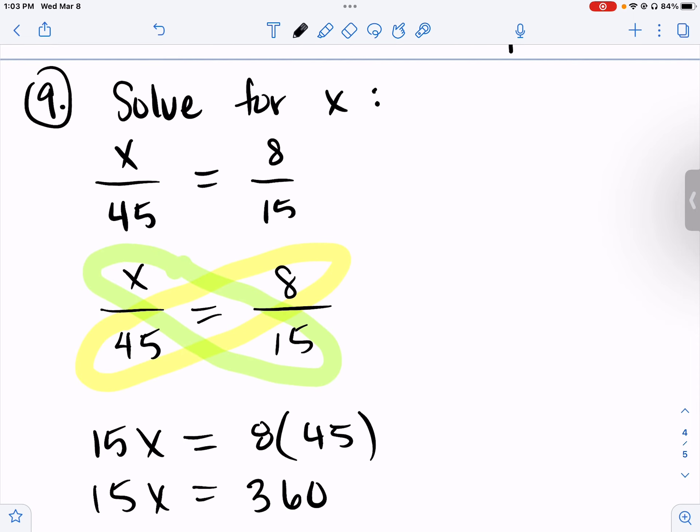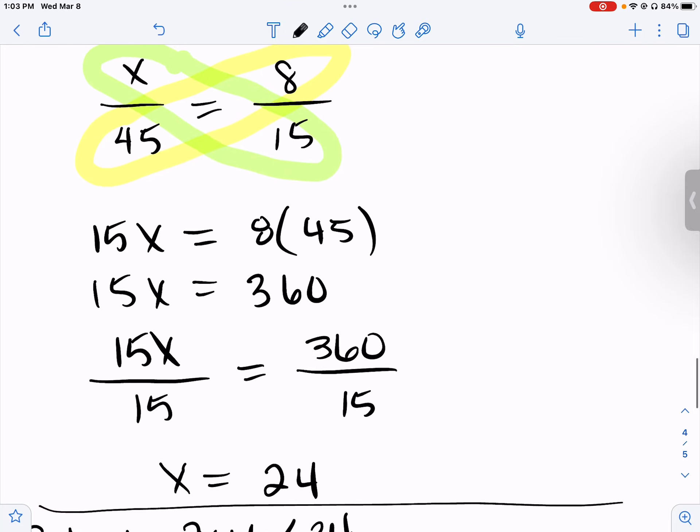Number nine: Solve for x. x over 45 equals 8 over 15. When you have two fractions, you can use that quick little crisscross method. So multiply x times 15 is 15x, 8 times 45 is 360. So 15x equals 360. Divide by 15 on both sides, x equals 24.